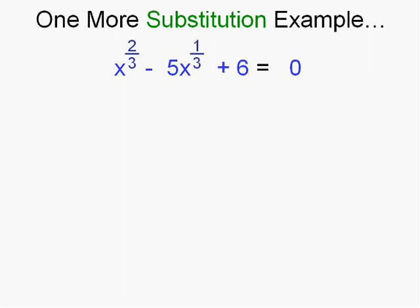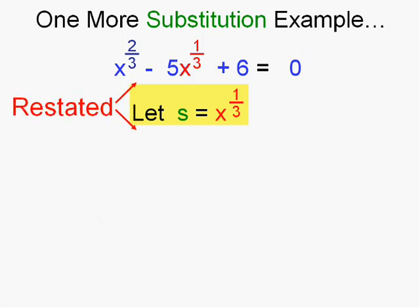Let's do one more substitution example. What are we going to let s be this time? Well, it's not going to be that bad. It's the same thing if you think about it. It's the middle term without the coefficient. So s equals x to the one-third. Now, it looks a little scary, doesn't it? But if you think about it and we restate this, this term x to the two-thirds is x to the one-third squared. So it could be written s squared, couldn't it?